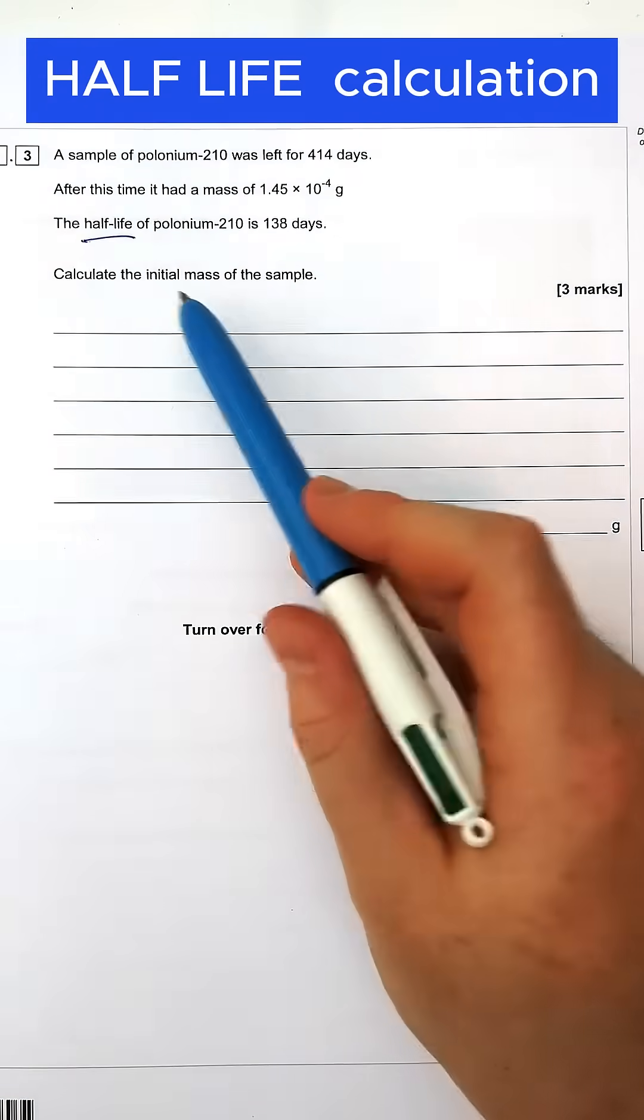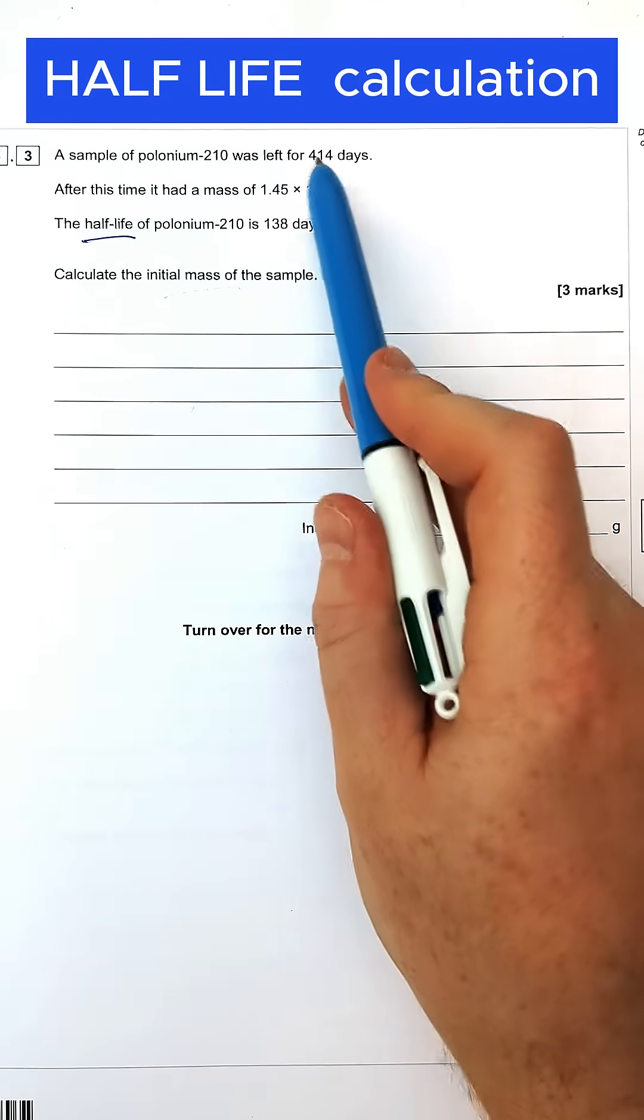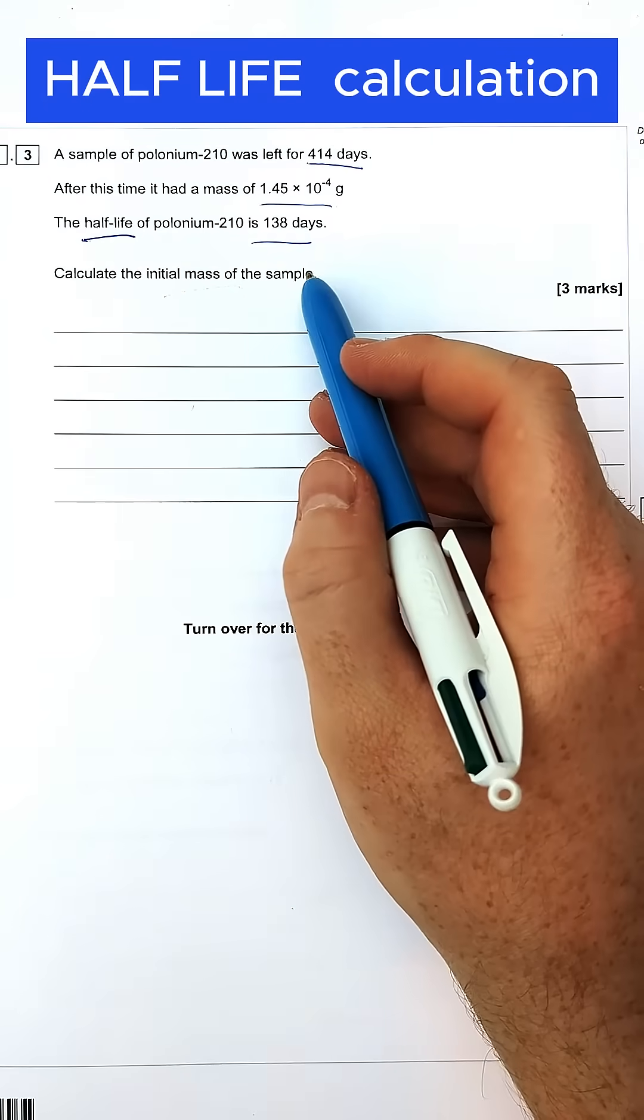What we're going to look at is how do you work out the initial mass of a sample if we know its mass by a specific amount of time, 414 days, and we also know the half-life is 138 days.